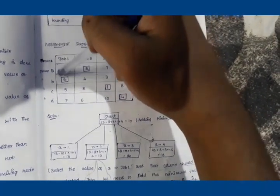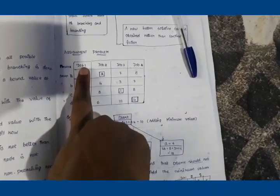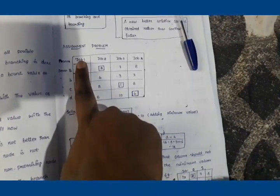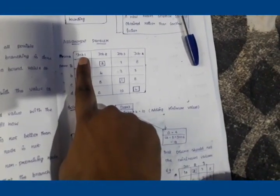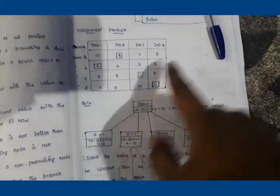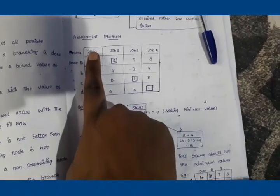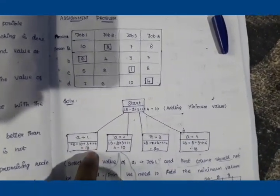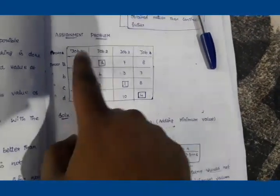With Job 1's column hidden, we find minimums for the remaining persons. For Person B the minimum from Jobs 2, 3, 4 is 3; for Person C the minimum is 1; for Person D the minimum is 4. Adding these: 10 + 3 + 1 + 4 = 18. So the lower bound when A is assigned to Job 1 is 18.